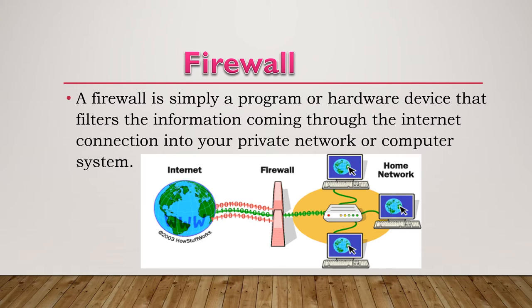Firewall is simply a program or hardware device that filters the information coming through the internet connection into your private network or computer system. A firewall is a network security device that monitors incoming and outgoing network traffic and permits or blocks data packets based on a set of security rules. Its purpose is to establish a barrier between your internal network and incoming traffic from external sources such as the internet, in order to block malicious traffic like viruses and hackers.